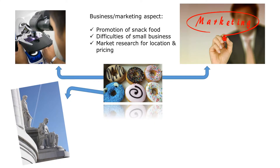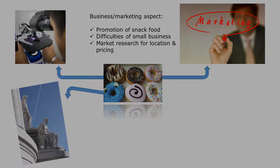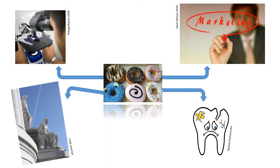Alternatively, you could examine a marketing aspect, like promotion and advertising of donuts. You could look at the business challenges a small bakery might face against competition like Dunkin' Donuts, or how a new business might complete market research for a new donut shop. The point is, a shorter paper of 4-6 pages requires that you have a more specific, more manageable focus.